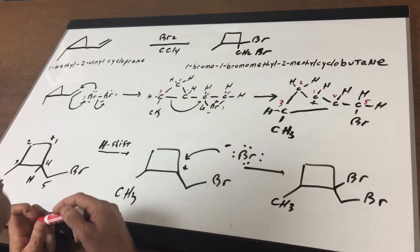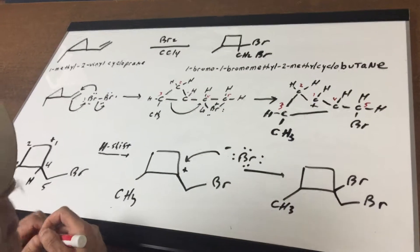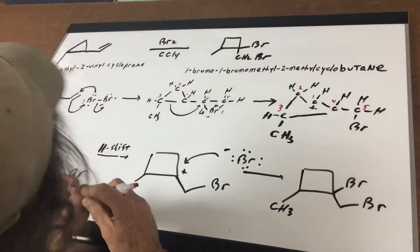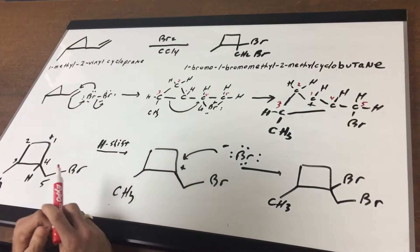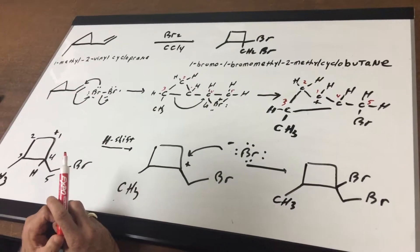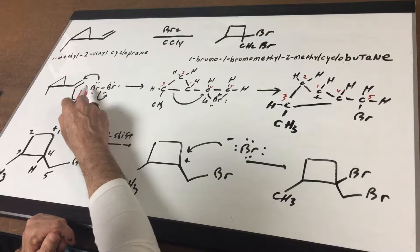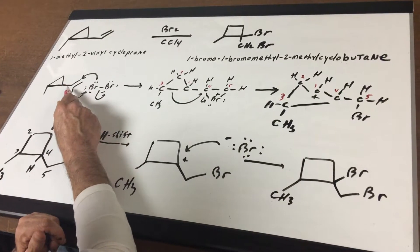What I'm gonna first do is add the bromine across the double bond. So as you can see the way the arrows move, this moves to here, and we break the bond and we form the bromonium ion.